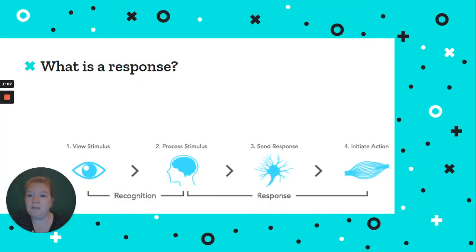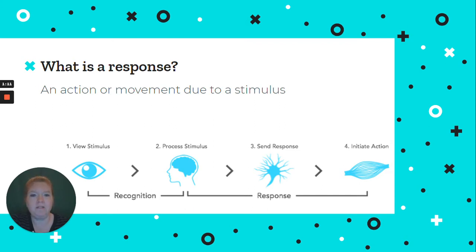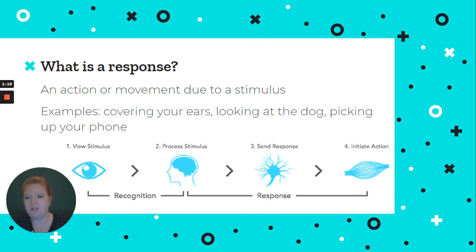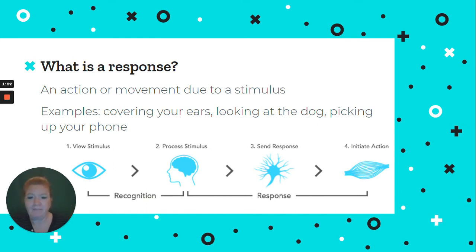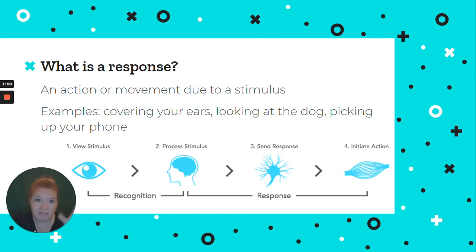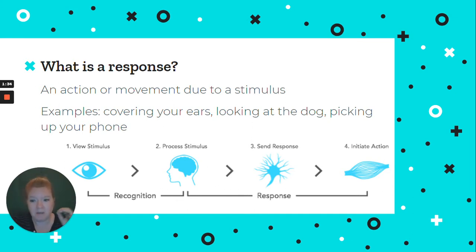And what is the response? The response is the action or movement because of the stimulus. So the loud noise — cover your ears. Dog barks — look at the dog. Notification — pick up your phone. Touch a hot stove — move your hand away. You view the stimulus, you process it, you send a response, and there's an action. The action is the response: how your body acts because of a stimulus.